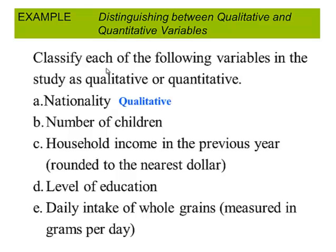The number of children. Okay, that can be a number and that number we can perform operations on, so this would be quantitative. Household income in the previous year rounded to the nearest dollar. Again, this is a number. We can perform operations on it. It's quantitative.